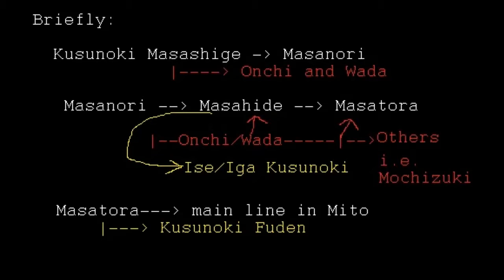Also around the time of Masahide, shown in yellow, there is a branching off of the Issei Iga Kusunoki. The Kusunoki of the Issei Iga region are not the main line — they are a branch that splits off around this time. Then from Masatora you have the main line continuing in Mito, but also a branch from Masatora and his son that produces Kusunoki Fuden.